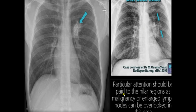Comparing the right hilum with the left hilum: the right hilum shows a normal concave orientation or configuration. On the other side, it is convex with somewhat spiculated margins. These findings represent lymphadenopathy along with some tumor.